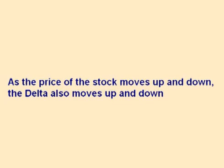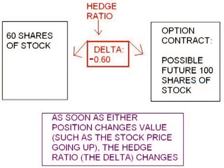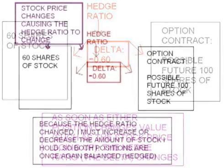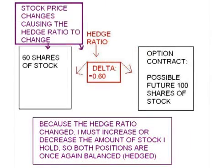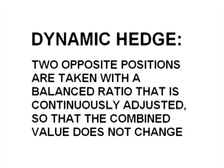Once the price of the stock does change, the Delta changes as well. As a stock goes up and down in value, the Delta increases and decreases. This means that once the stock price moves, a once-hedged position is no longer completely hedged. To maintain a hedge, the ratio of option contracts to shares of stock must be readjusted by increasing or decreasing the amount of shares of stock or the number of option contracts, so that the hedge ratio is once again balanced.